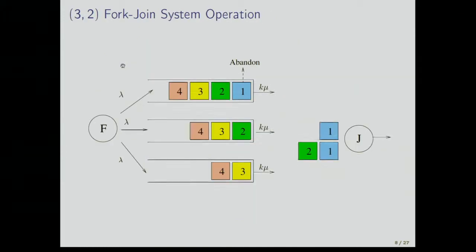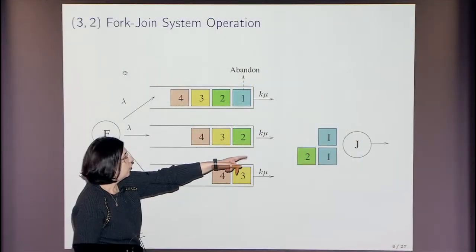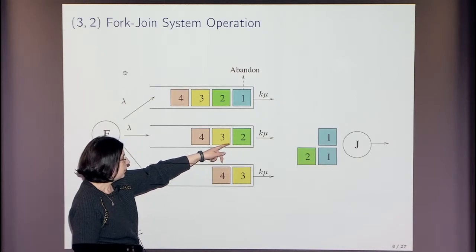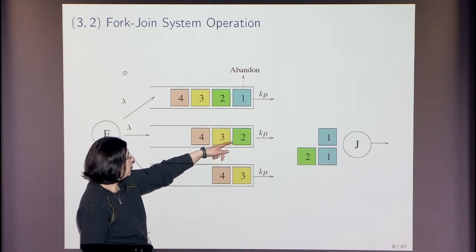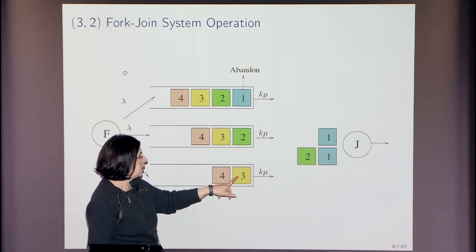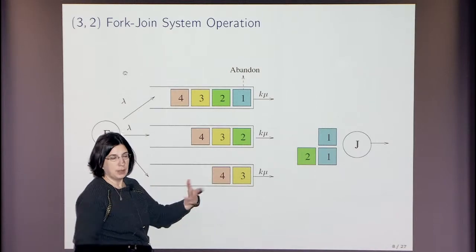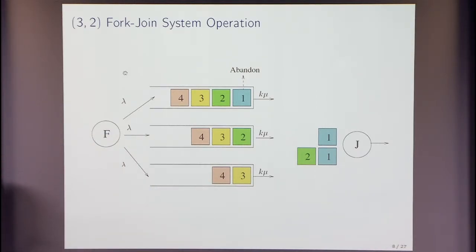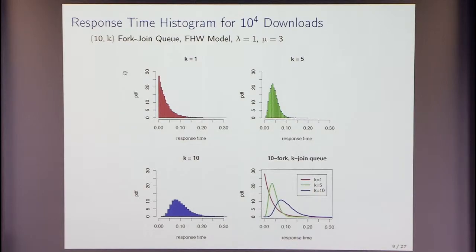That was the architecture. Now here is how the operation looks: the request is replicated to all servers. For the first job, some tasks are already served; others are waiting. As soon as K responses arrive, remaining requests can be abandoned. There is a lot of dependence here, and that's why it's so hard to analyze.